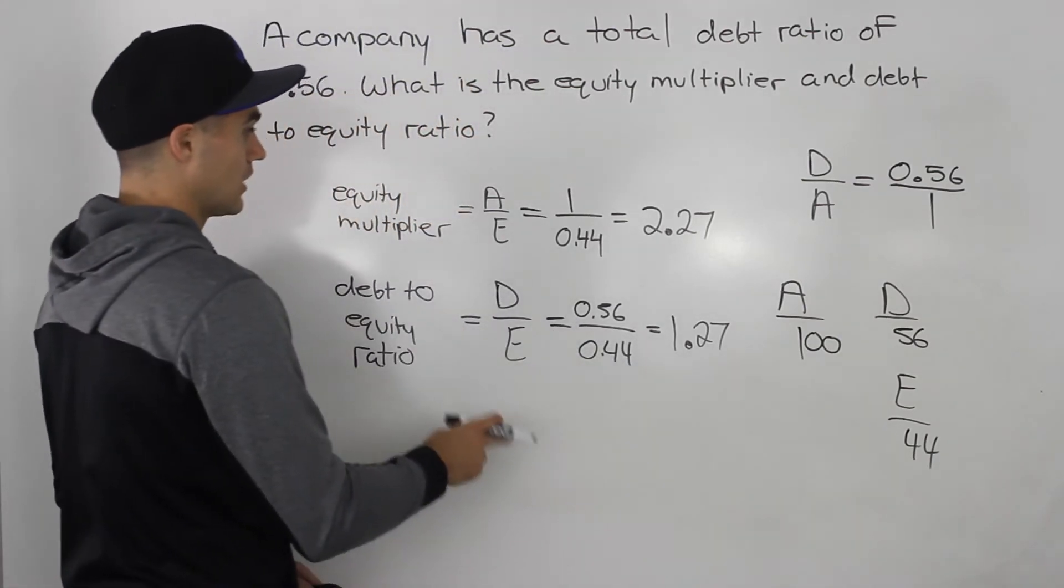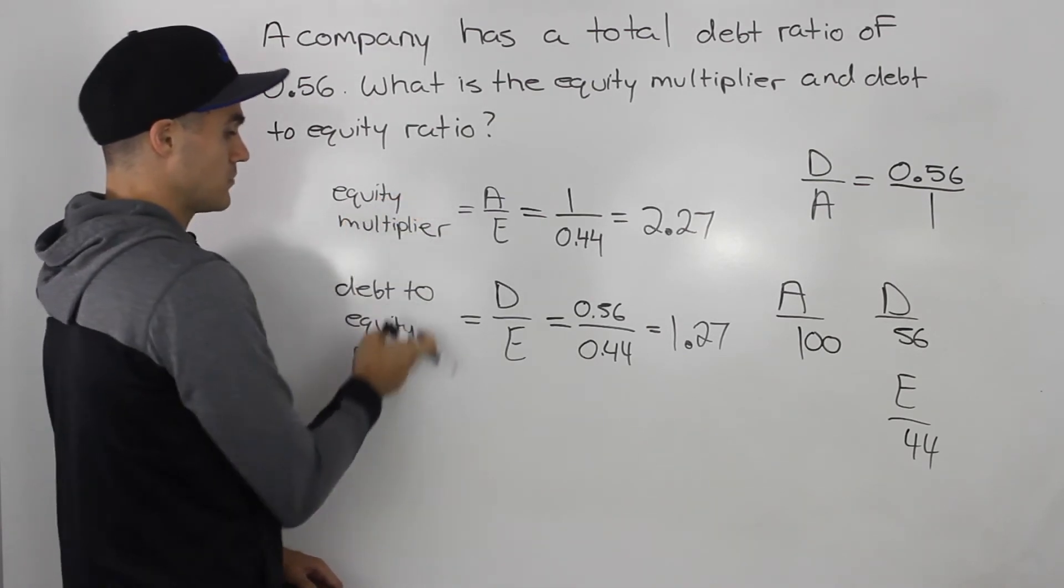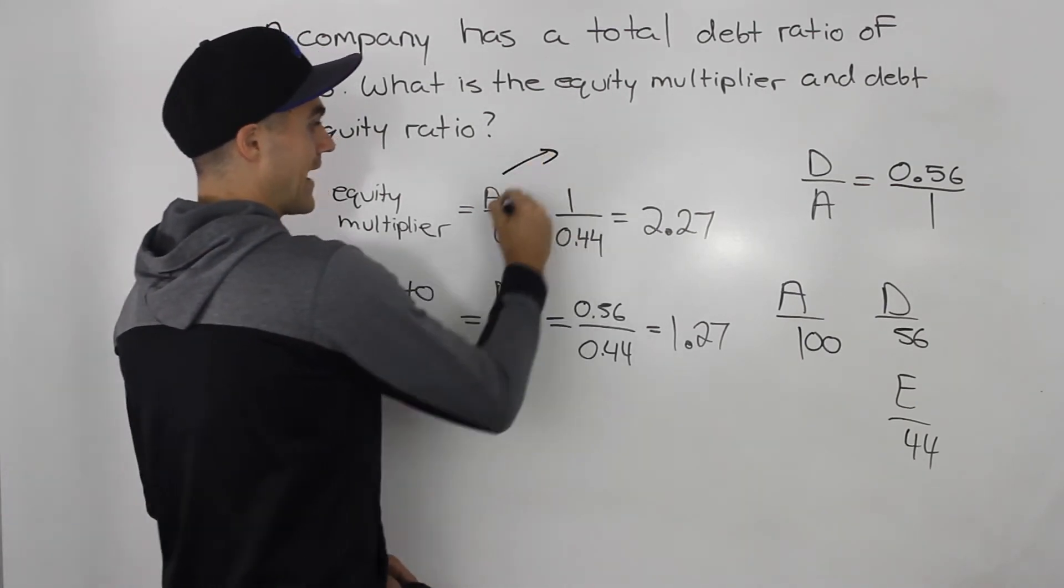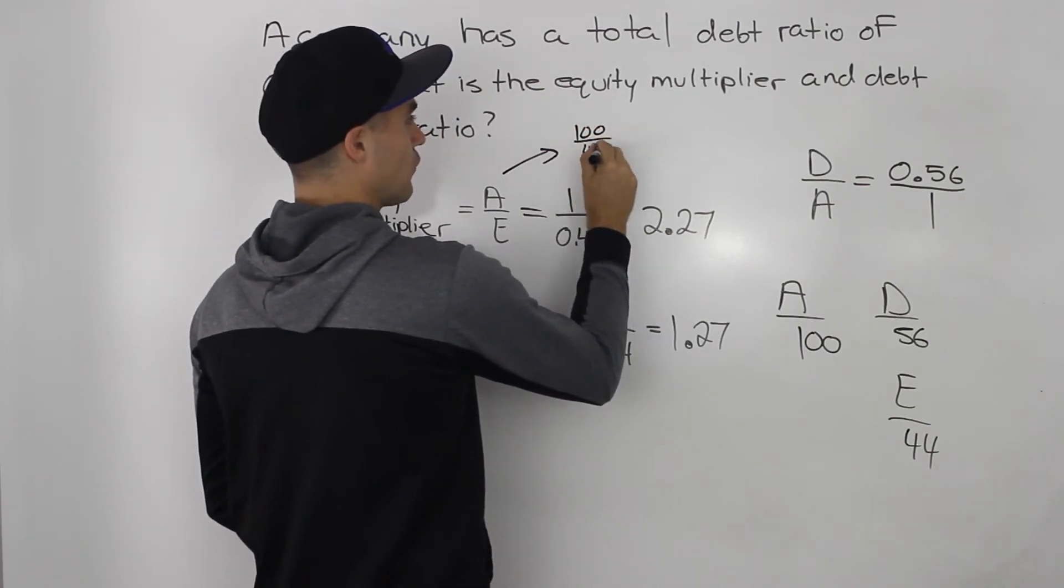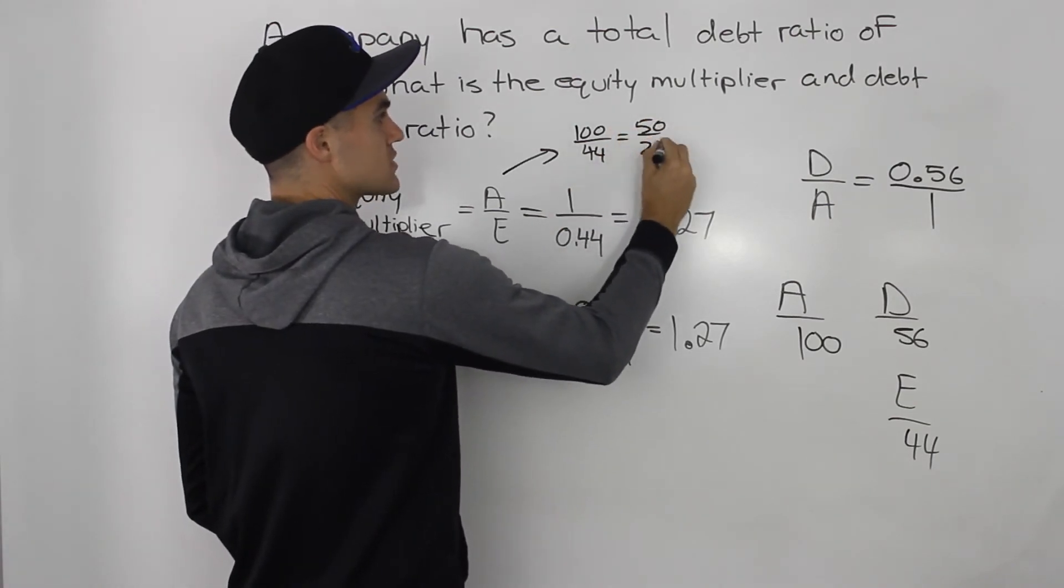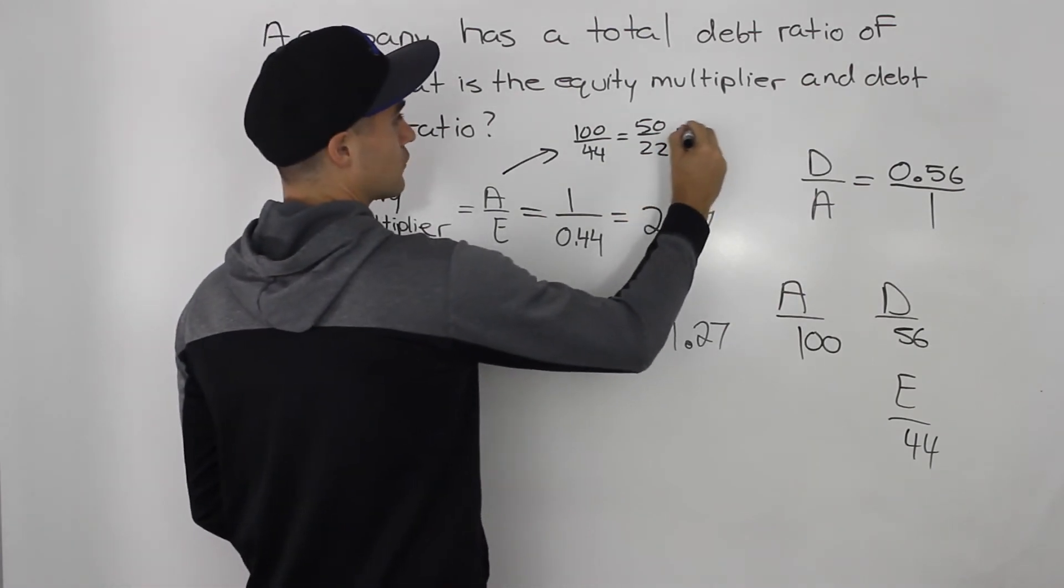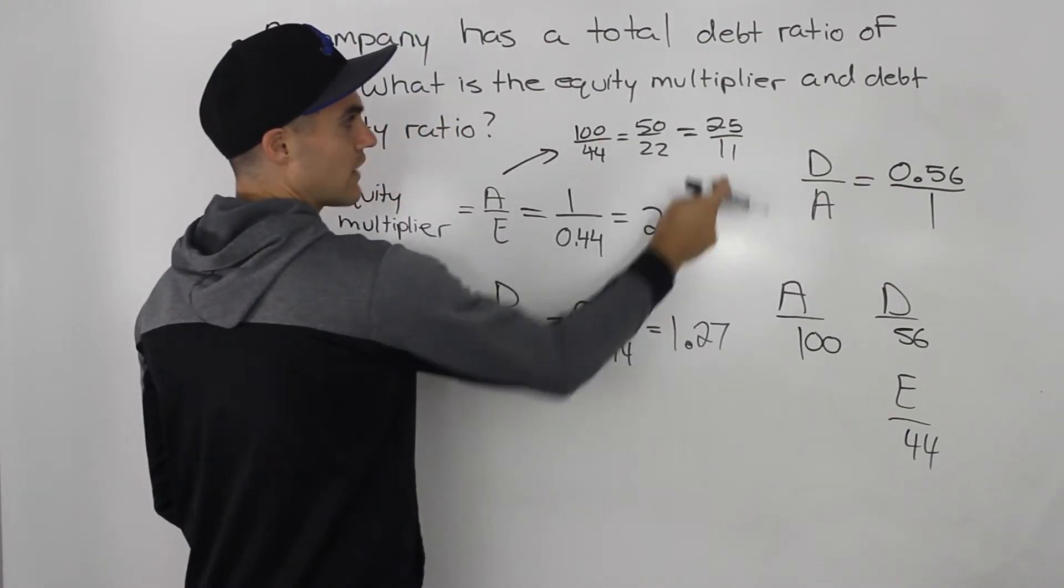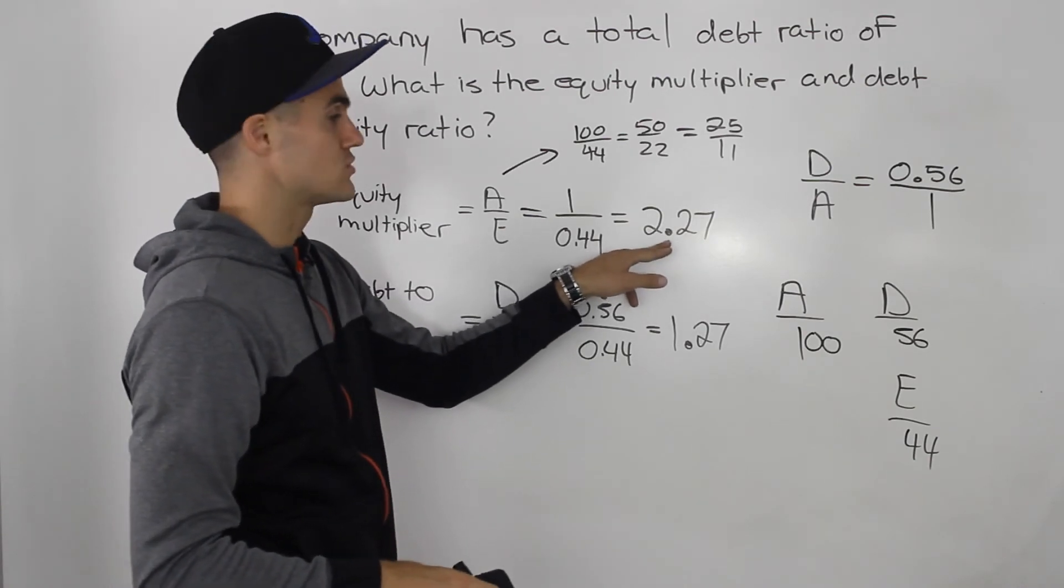And then what you can do is you can find these ratios, the equity multiplier and the debt to equity ratios as actual fractions. So, assets over equity would be 100 over 44. Okay? And that would reduce to 50 over 22. If you divide both the numerator and the denominator by 2. And then 50 over 22 would reduce to 25 over 11. And 25 divided by 11, if you input that in the calculator, you would end up getting that same amount, 2.27.